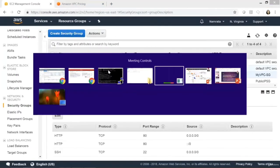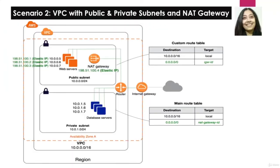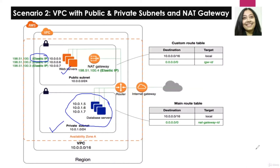We have completed the steps up to provisioning the web server and associating an elastic IP address. The next thing is to provision an EC2 instance in our private subnet — it does not have any elastic IP, only a private IP address.